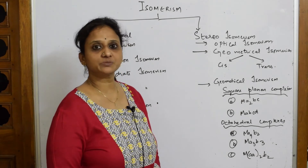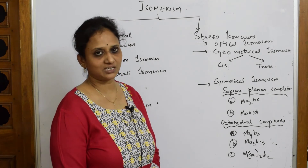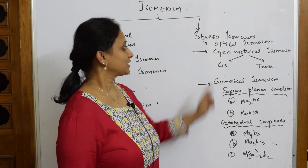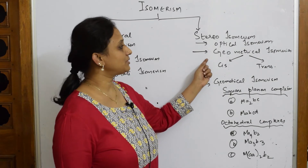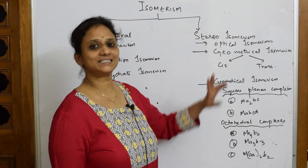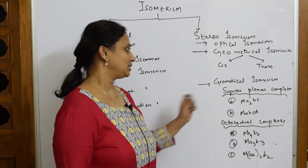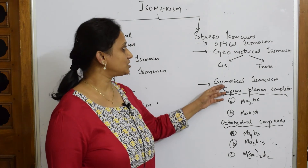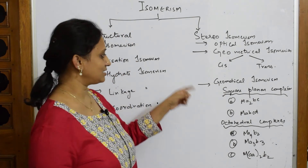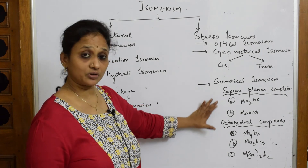Under stereo isomerism, we are going to learn about optical isomerism, where the concepts of enantiomers and diastereomers will come into picture. Then under geometrical isomerism, I'll be teaching you about cis and trans — how to draw cis and trans isomers. We'll also be studying another important aspect of geometrical isomerism.